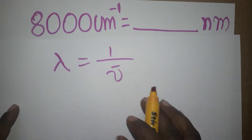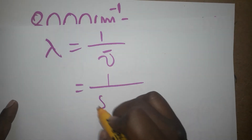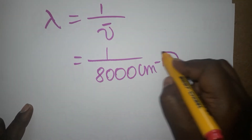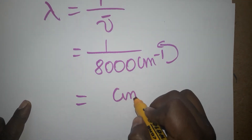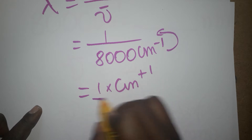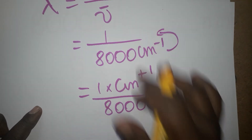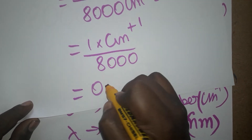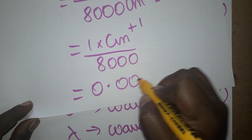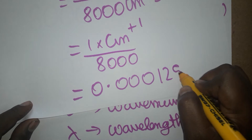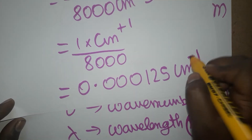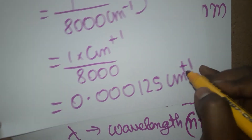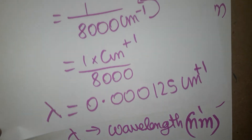Wavelength is equal to 1 divided by wave number, so 1 divided by 8000 centimeter inverse. Bringing centimeter inverse from denominator to numerator, it becomes centimeter to the power plus 1, multiplied by 1 divided by 8000. So 1 divided by 8000 gives us 0.000125 centimeter. The exponent minus 1 in the denominator becomes plus 1 in the numerator.